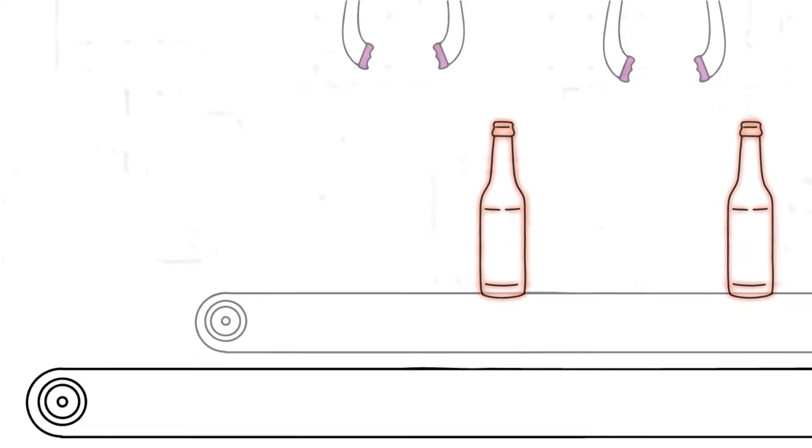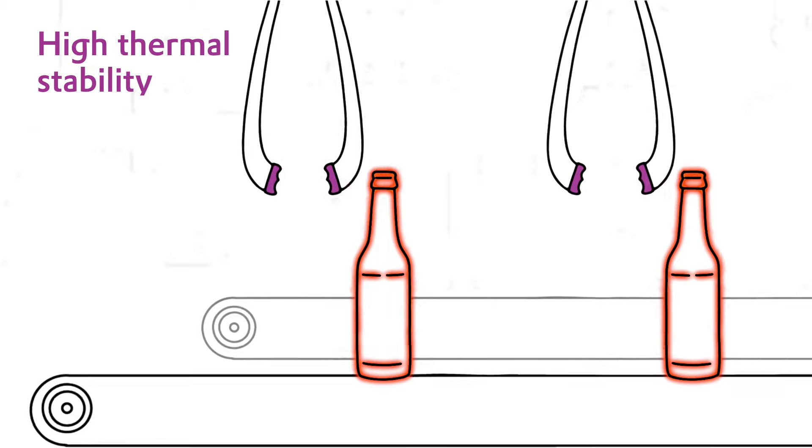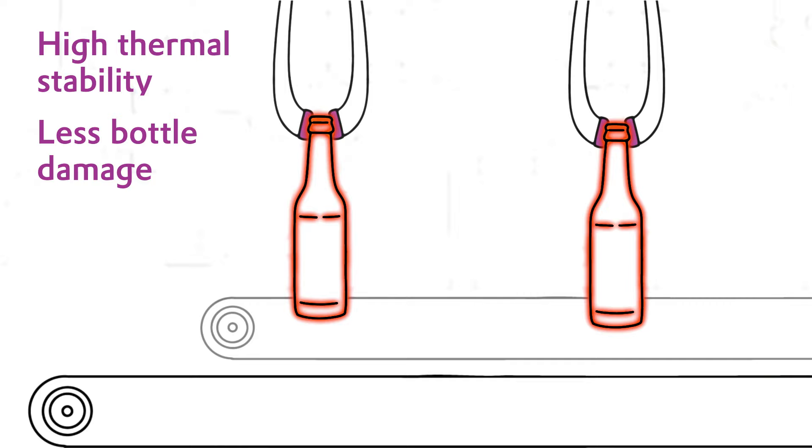Polyamide-based grippers can easily handle blazing hot bottles during production. Because of their high thermal insulation properties, bottles can be manufactured without any need for cooling touch points, which can cause bottle damage.